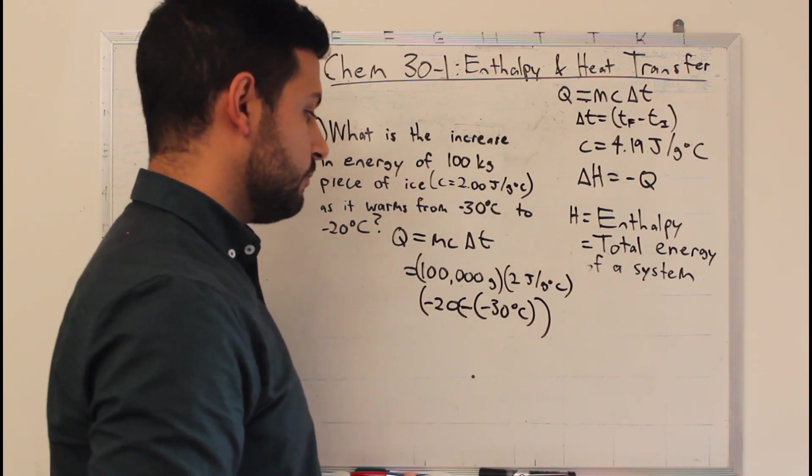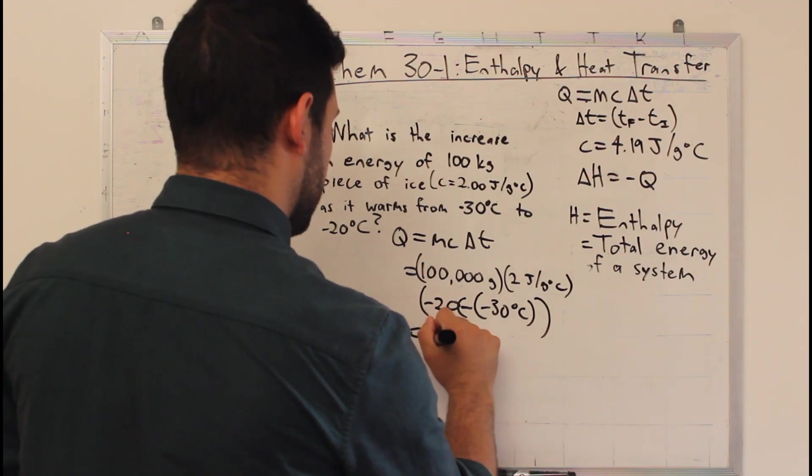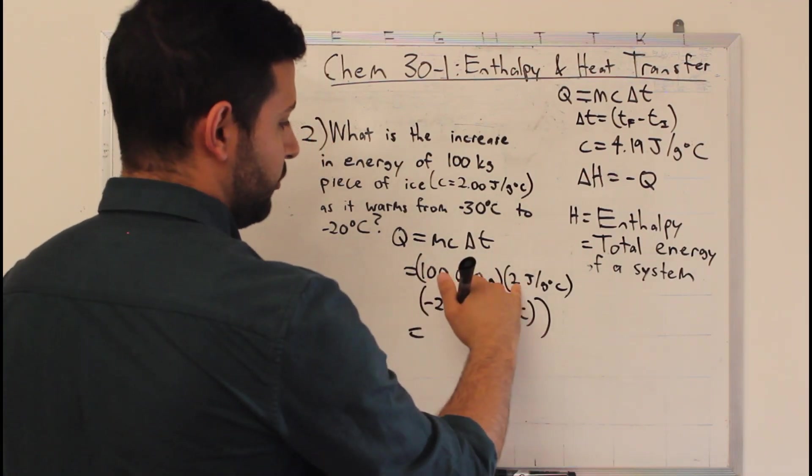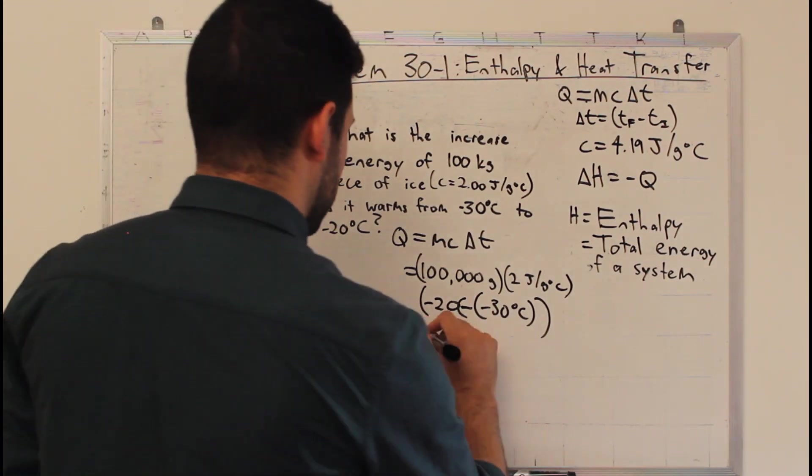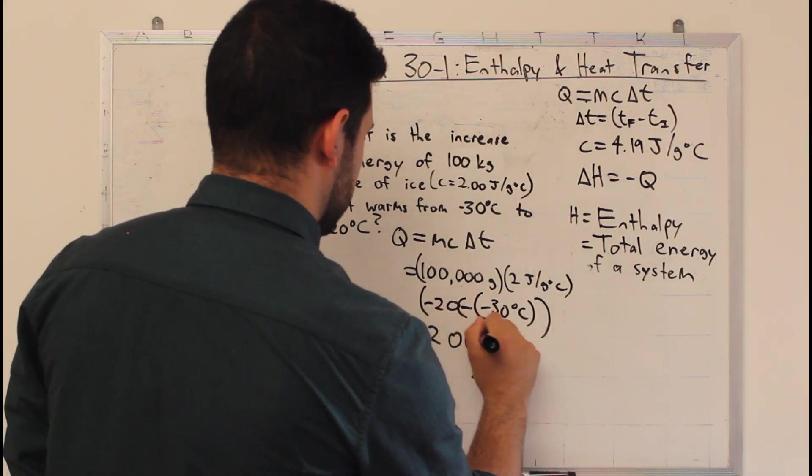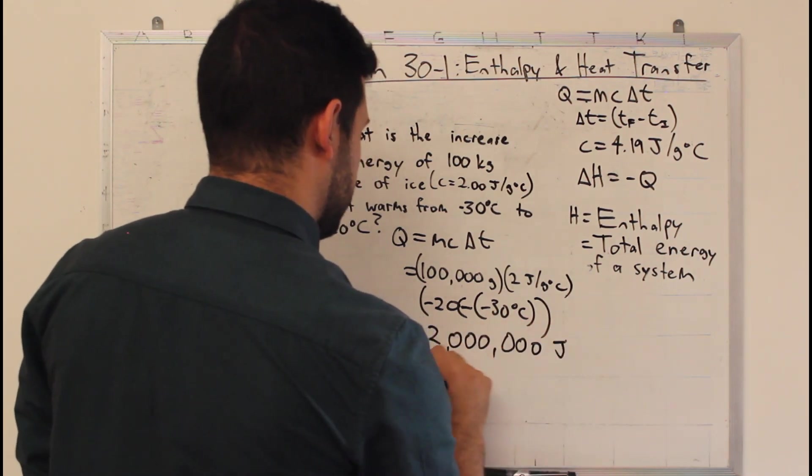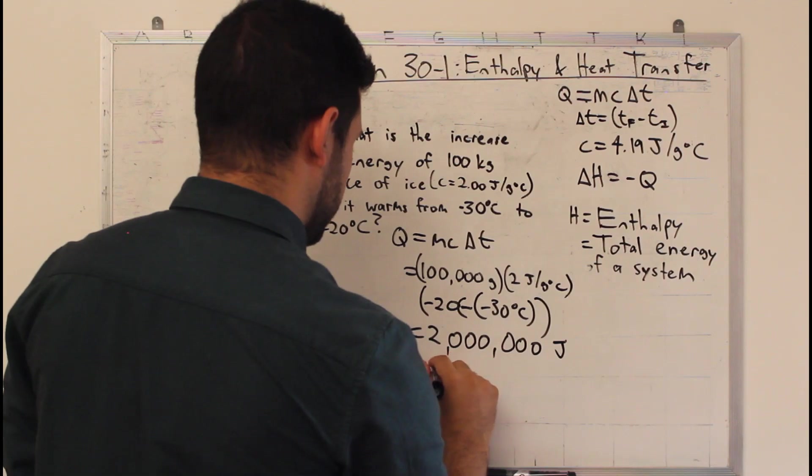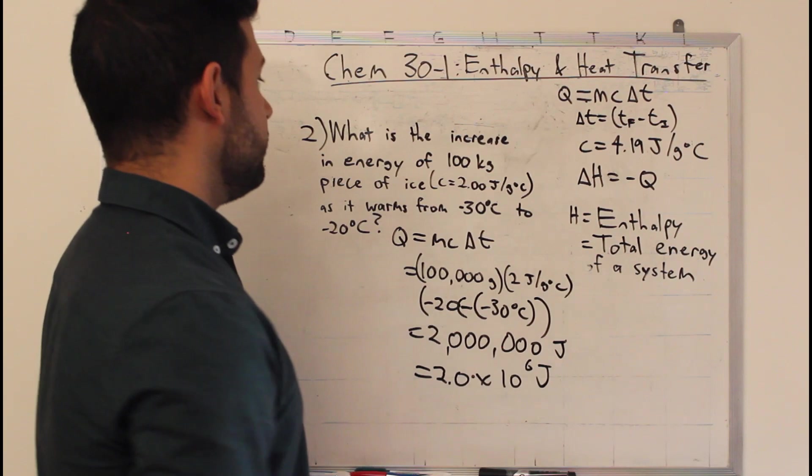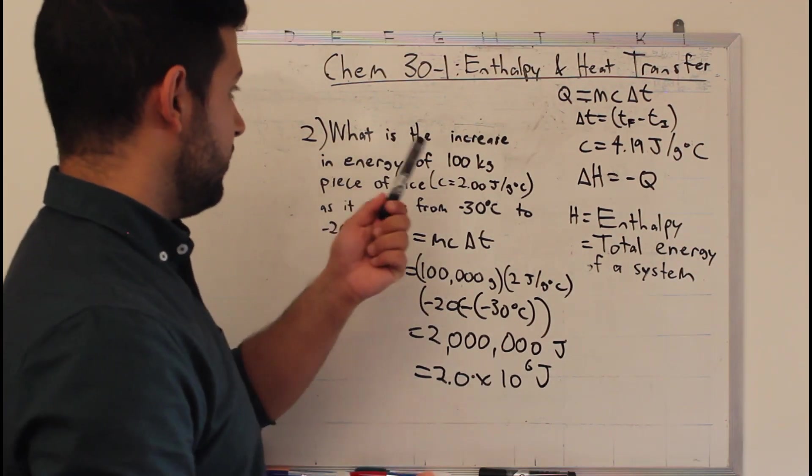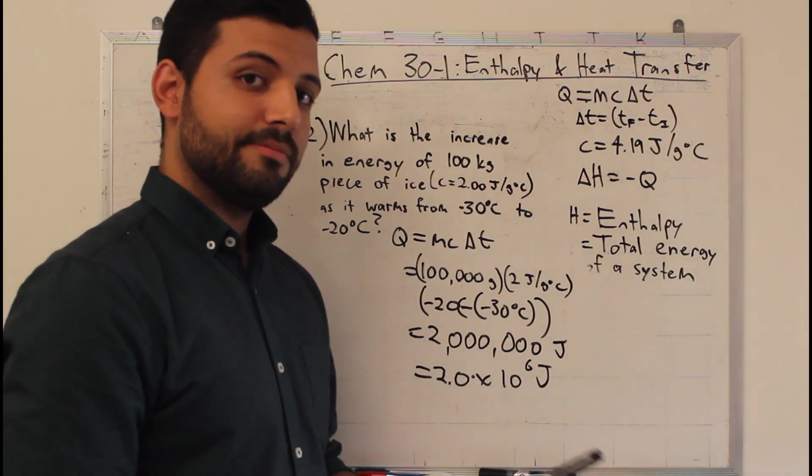So, what we end up with is 100,000 times 2, so 200,000 times 10, add another zero, becomes 2 million joules. Turn that into sig digs, we have 2 times 10 to the 6 joules, is the increase in energy when 100 kilos of ice warms from minus 30 to minus 20.